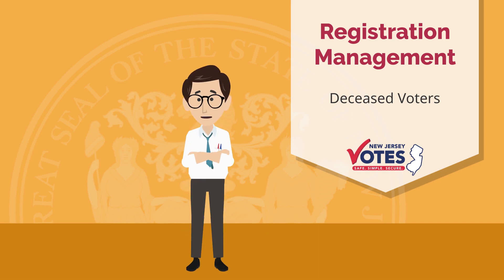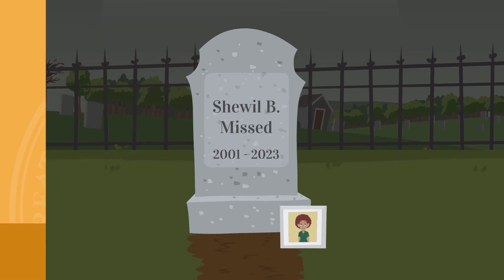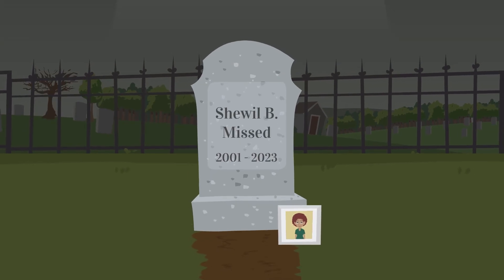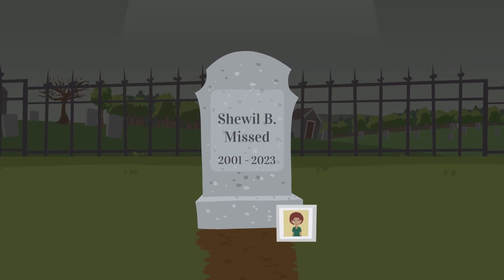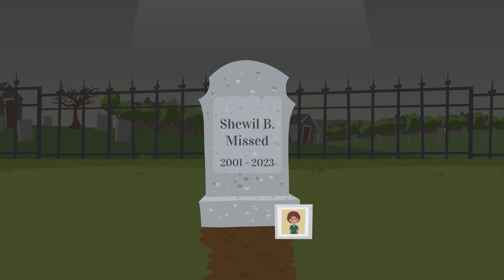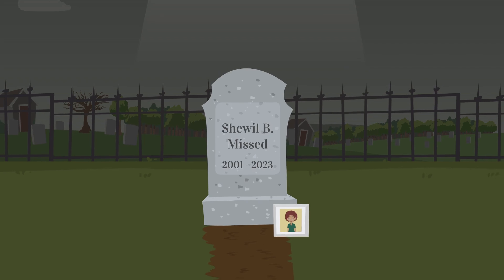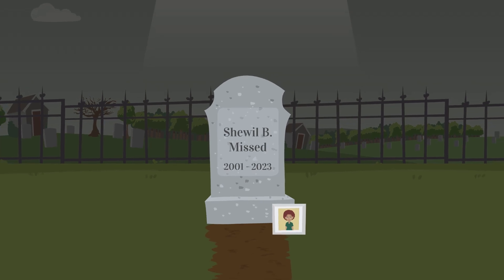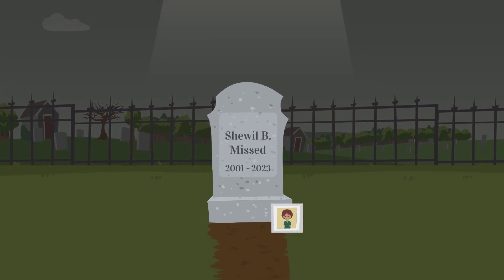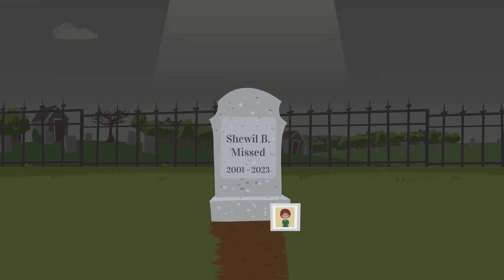Welcome to the second episode of the Registration Management Series: Deceased Voters. This episode is intended to bring clarity to the processes in place to make modifications to the voter roll when someone passes away.